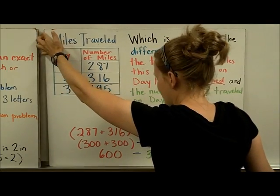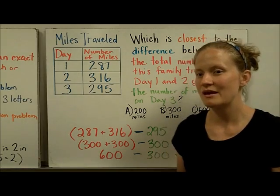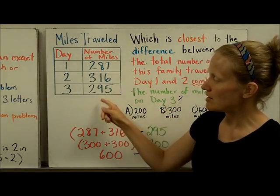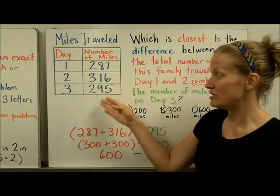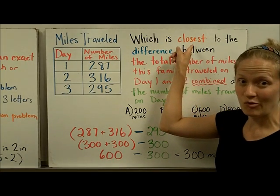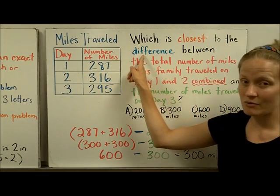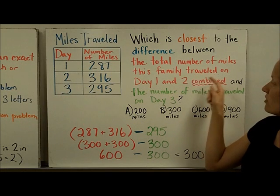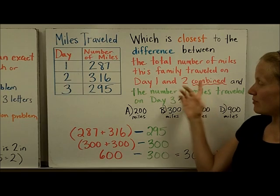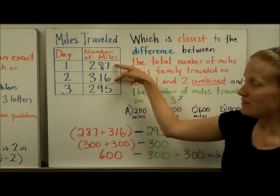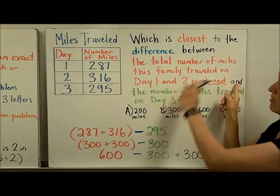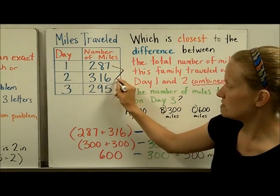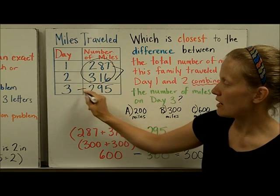To end, here's a problem in a common question format. You're given a chart showing a trip with the days people traveled and how many miles they traveled each day. The question asks: which answer is closest to the difference between the total number of miles traveled on day one and day two combined, and the number of miles traveled on day three? The word 'closest' tells me we're estimating; 'difference' means we're subtracting; and 'combined' means adding day one and day two together first.